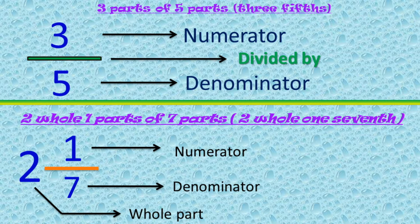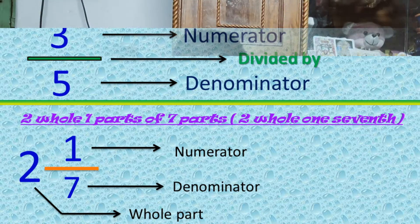Friends, I have taken another fraction 2 whole 1 by 7. Here 2 is the whole part, 1 is the numerator and 7 is the denominator.